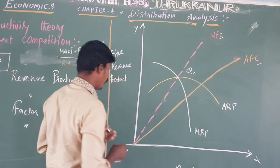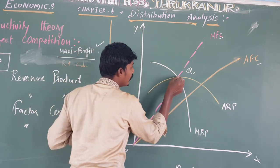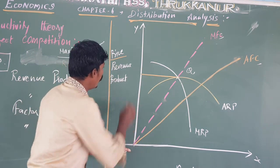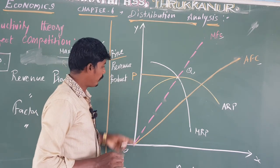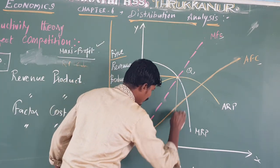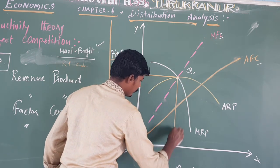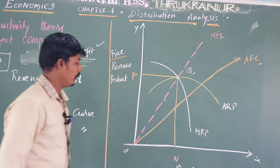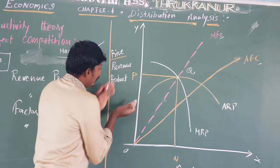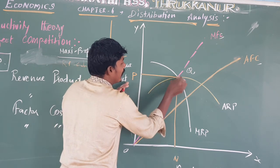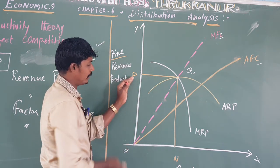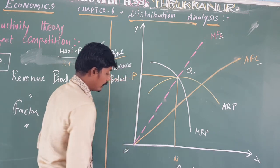From point E, if we draw a line down to the X-axis, we get point Q, and if we draw a line to the Y-axis, we get point P. So OP is the wage or price line, and OQ is the quantity of factor units. The price is determined at this intersection point on the Y-axis.